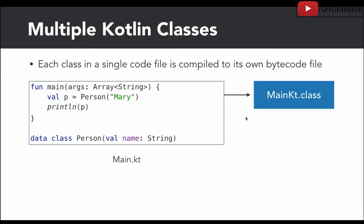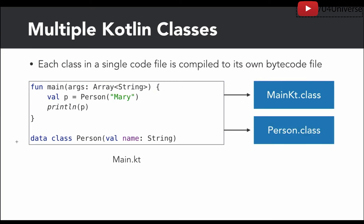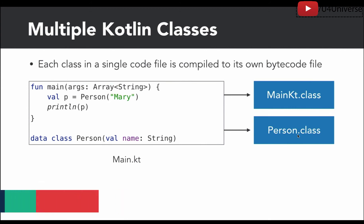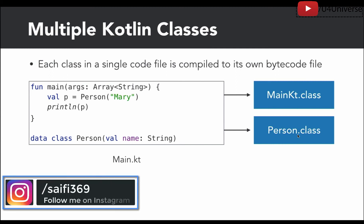We have a main code file — MainKT.class — and a data class, for example Person.class. Since we have two separate classes, Kotlin will compile and execute them as two separate bytecode files: MainKT.class and Person.class — independent classes. Basically, the code is compiled and the bytecode is sent to JVM. At the end, JVM doesn't know or care where the bytecode came from — it simply executes it.